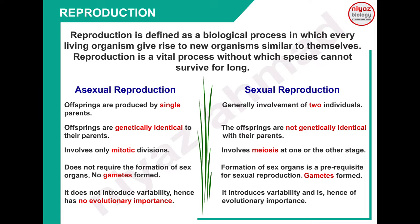Second difference: asexual میں single parent کا involvement ہوتا ہے تو جو offspring بنے گا وہ genetically identical ہوگا اپنے parent کے - کیونکہ gametes اور genes کی mixing نہیں ہو رہی ہے۔ جبکہ sexual reproduction میں دو parents کے gametes کی mixing ہو رہی ہے تو offspring genetically identical نہیں ہوگا اپنے parent کے۔ Third: asexual میں involves only mitotic division - صرف mitosis ہوتی ہے جبکہ sexual reproduction میں meiosis ہوتی ہے جب gametes بننے ہوتے ہیں۔ Asexual reproduction میں gametes بنتے نہیں ہیں اس لیے meiosis نہیں ہوتی۔